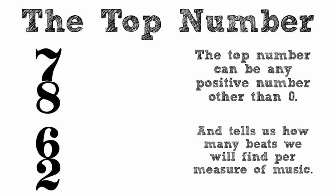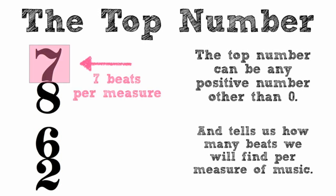The top number of a time signature is very important as well. It can be any positive number other than 0 and it tells us how many beats we will find per measure of music. In the top example 7-8 you can see there is a 7 on top. That means that there are 7 beats per measure. The bottom example 6-2 means that there are 6 beats per measure.